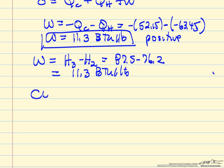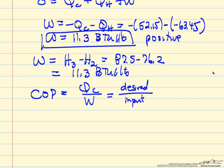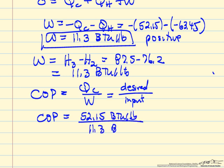The coefficient of performance is defined as QC over W. You can look at this as what is desired for a refrigerator, and this is what we have to input, what we have to pay for. So the coefficient of performance is 52.15 BTUs per pound divided by 11.3 BTUs per pound. This indicates how efficiently we use the work. For every unit of work we put in, we transfer 4.6 units from the low temperature, which is our objective.